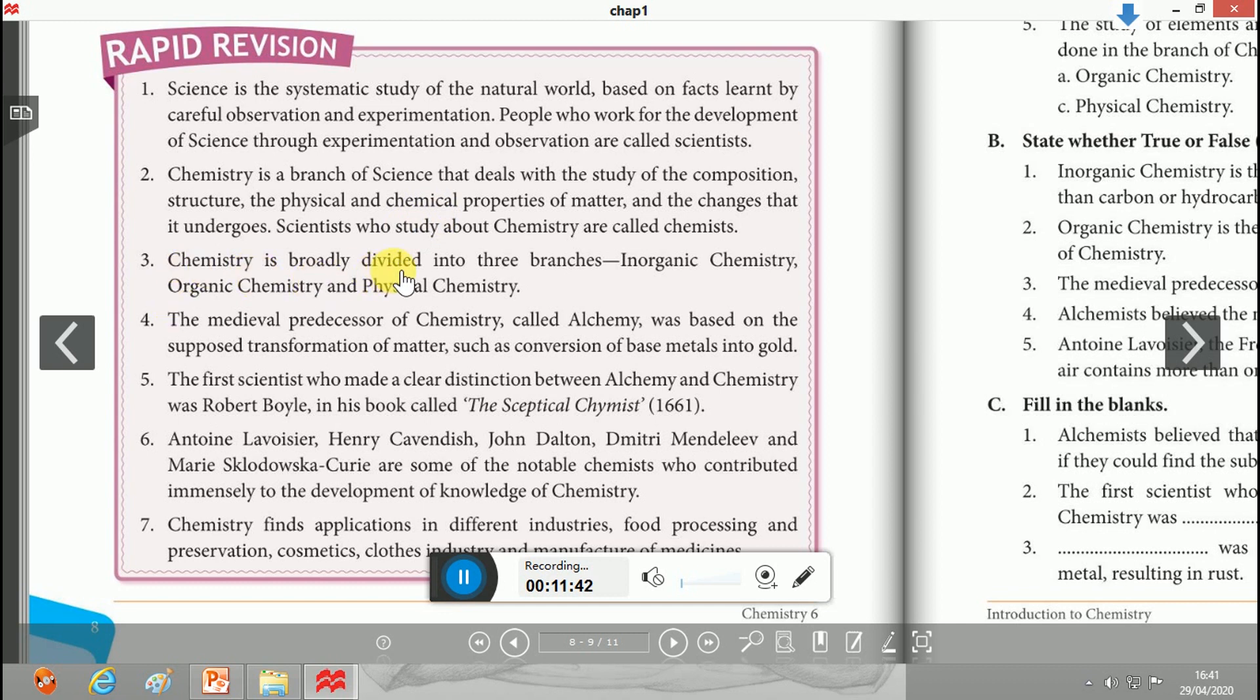Chemistry is broadly divided into three branches: inorganic, organic, and physical. These three parts we discussed in our first video made for Class 6. The medieval predecessor of chemistry called alchemy was based on the supposed transformations of matter, such as conversion of base metals into gold - the philosopher's stone.